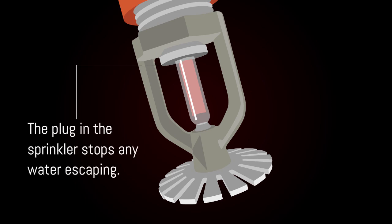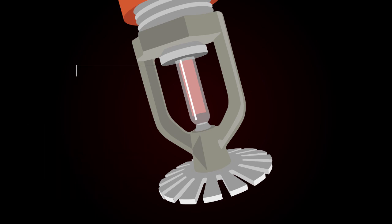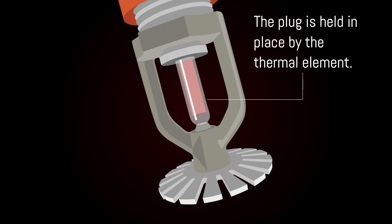The plug in the sprinkler stops any water escaping. The plug is held in place by the thermal element.